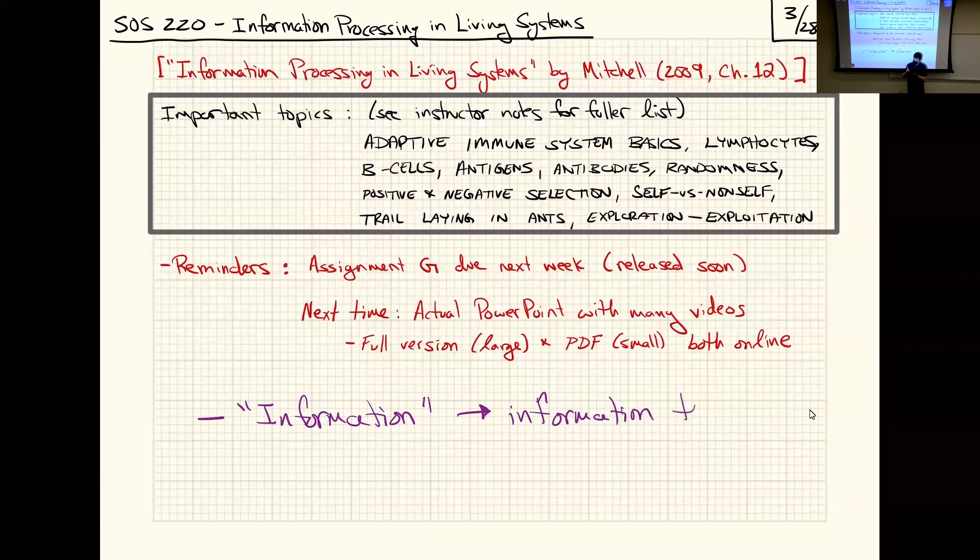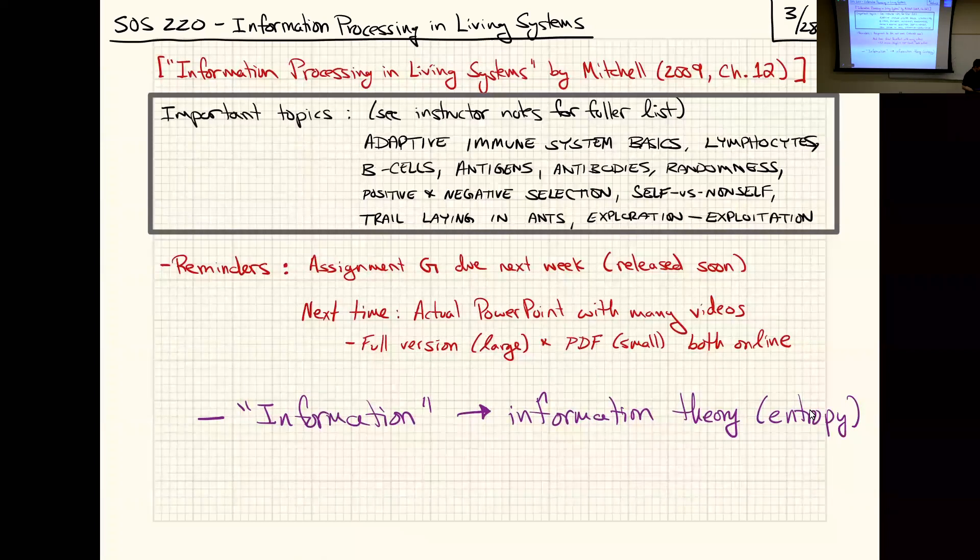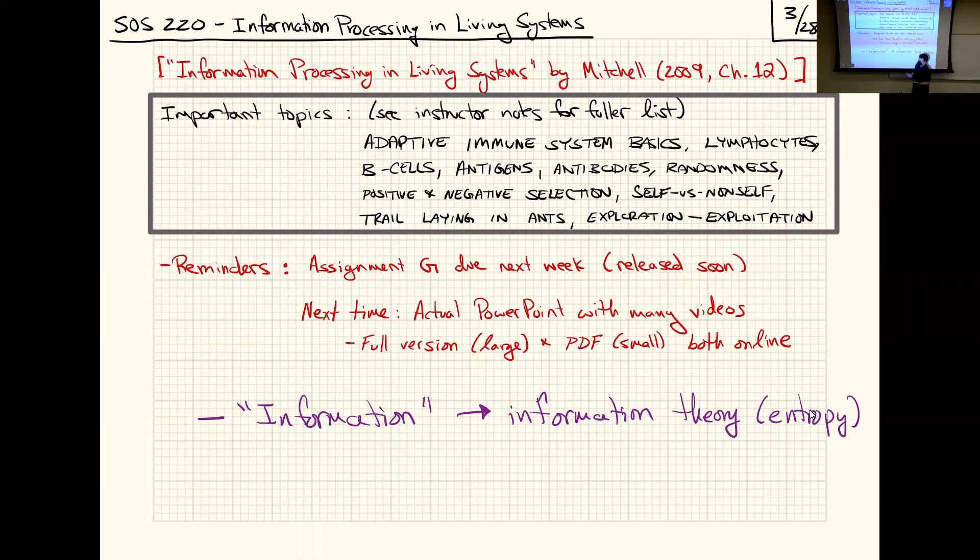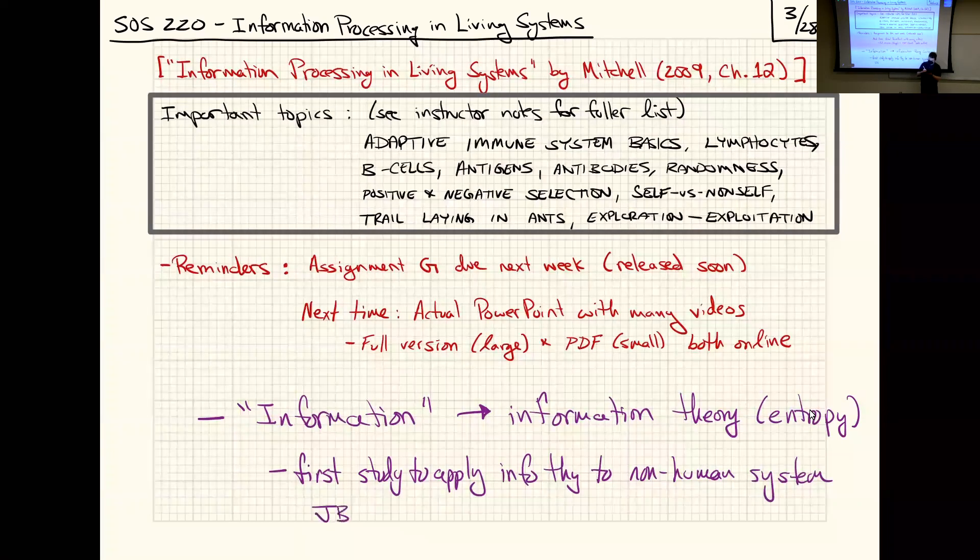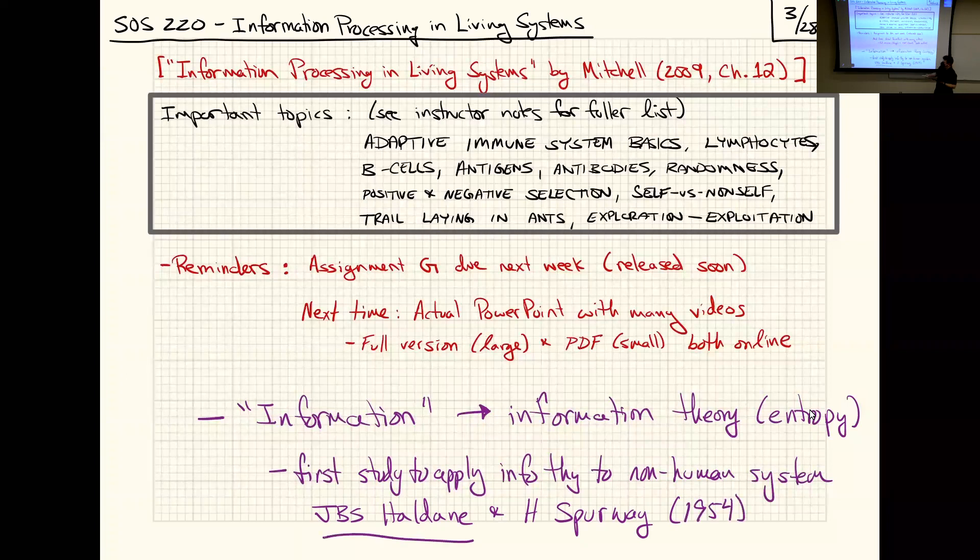Information is the key word for these two units. We've learned about ways to define information in terms of information theory, things that relate to entropy. The word information is a bit looser because as we went over the chapter, there's also this related word of computation. Before I get into the chapter, I did want to mention that the first study to apply information theory to a non-human system was a study by Haldane and Spurway.